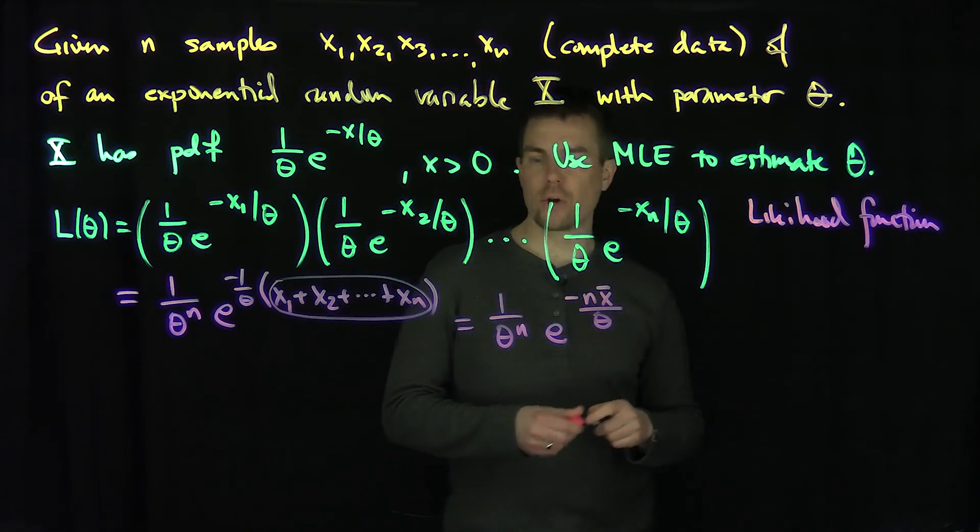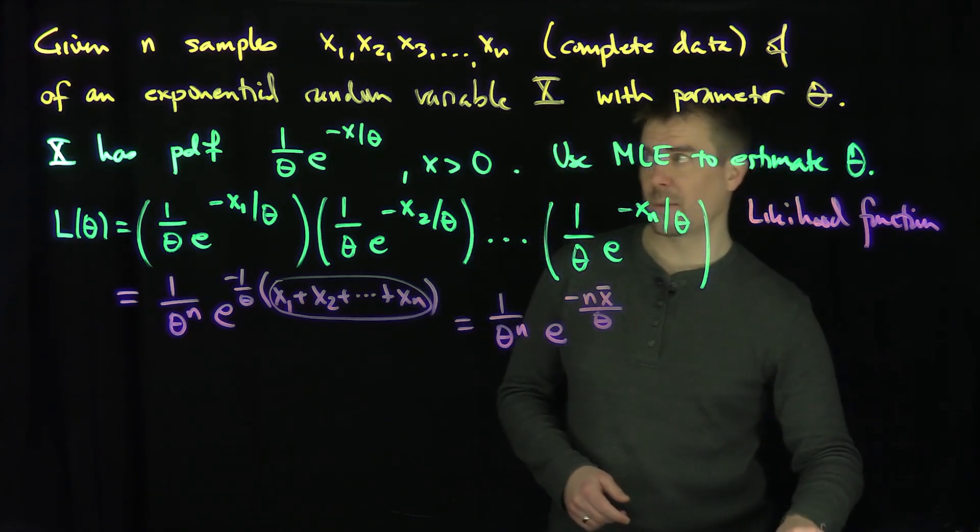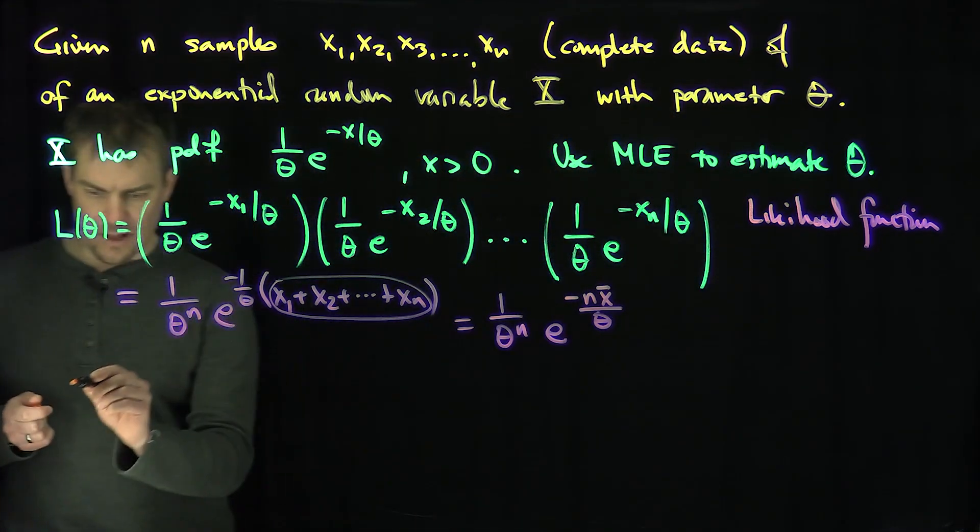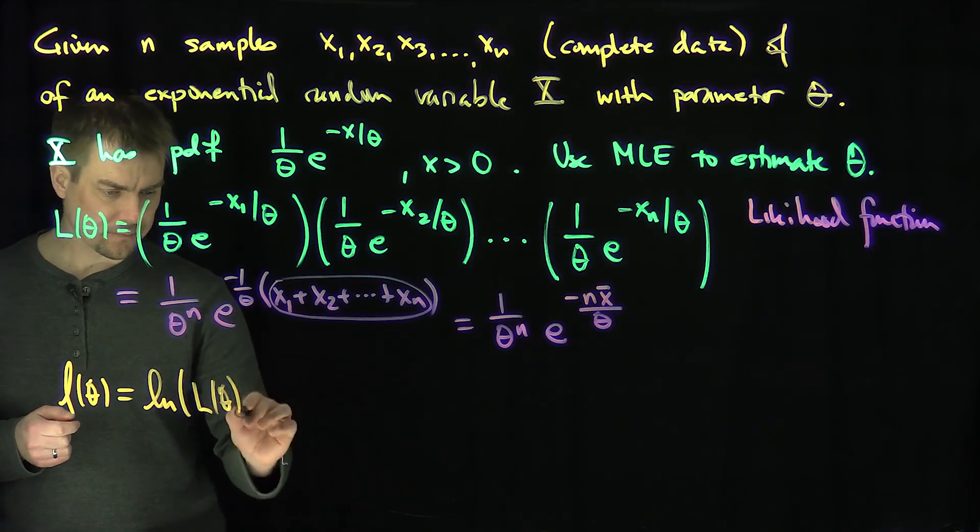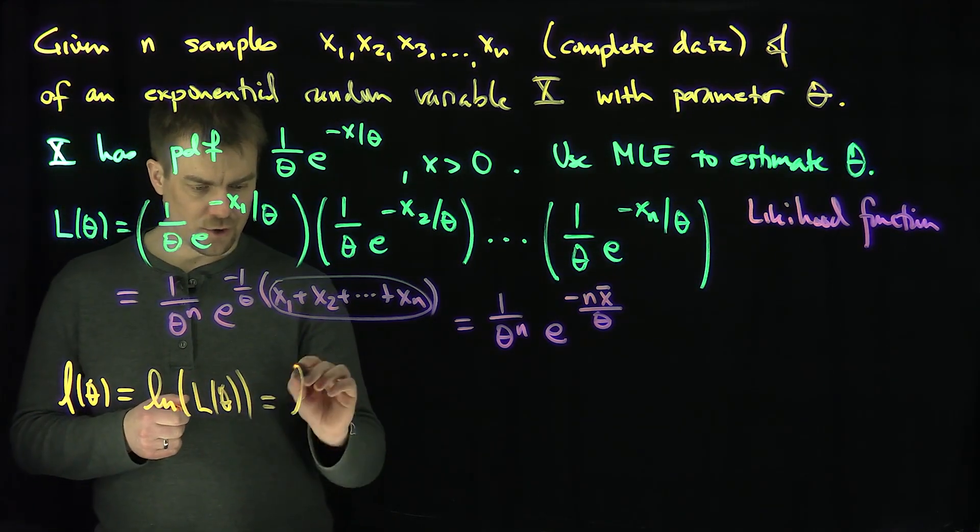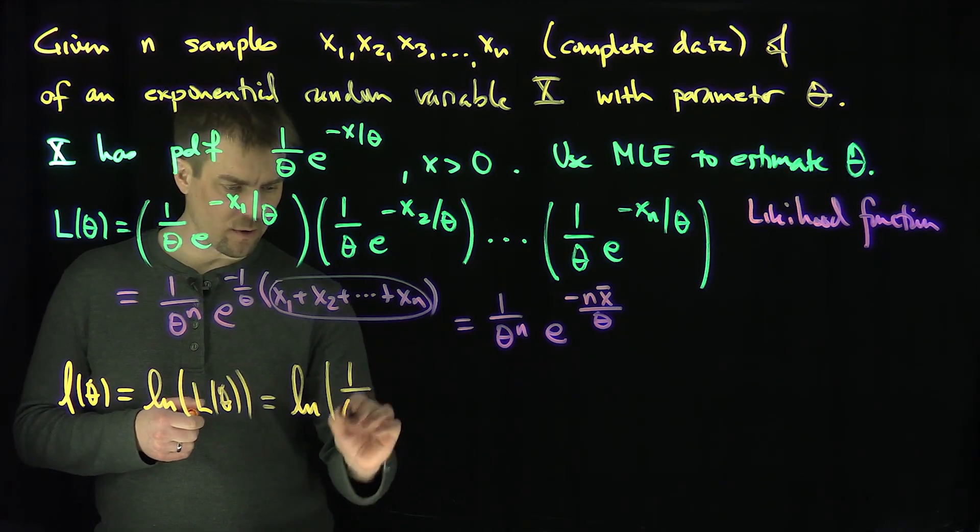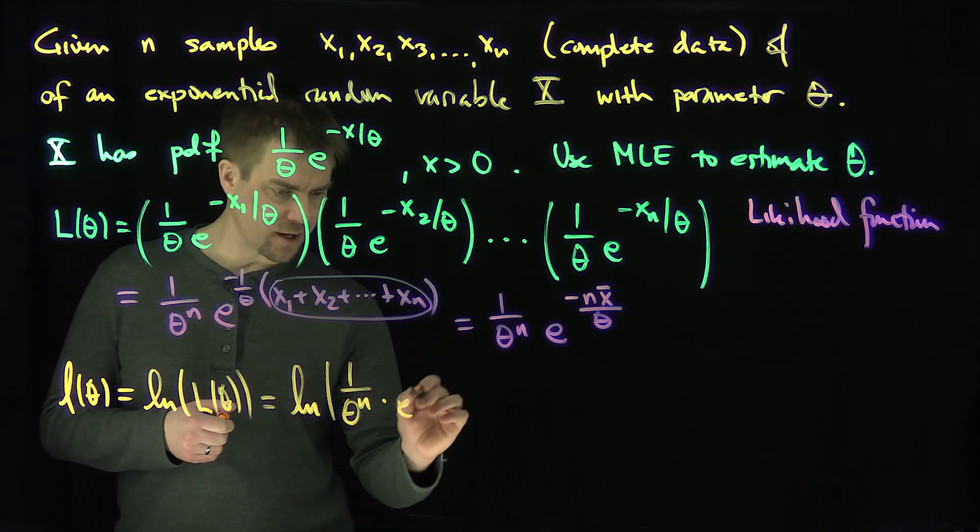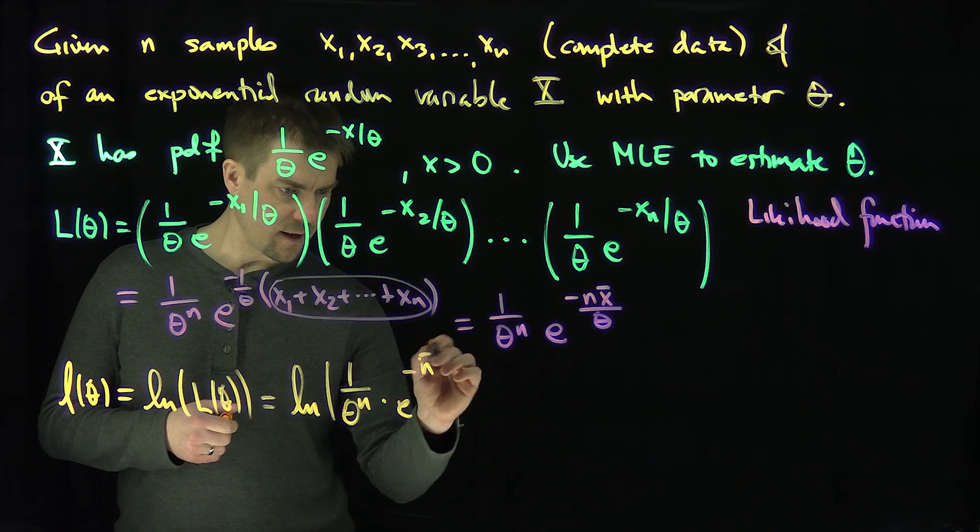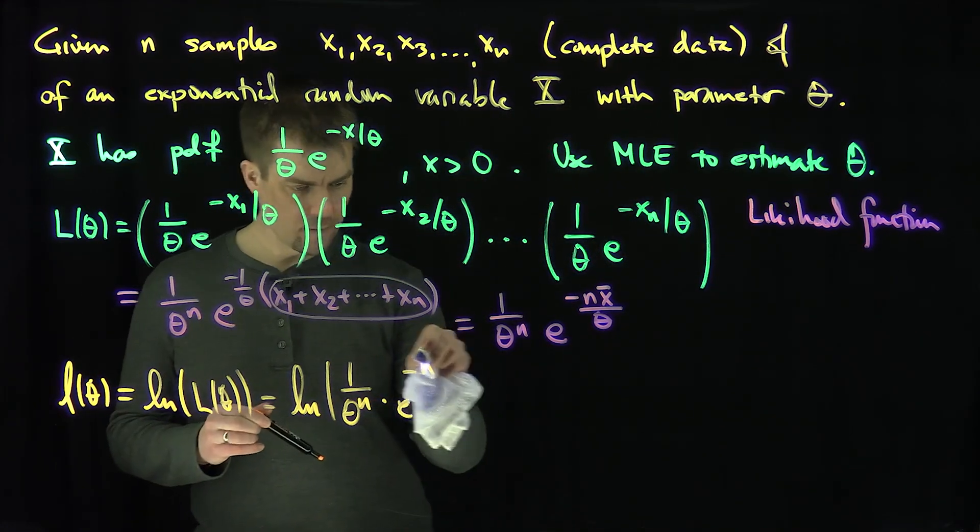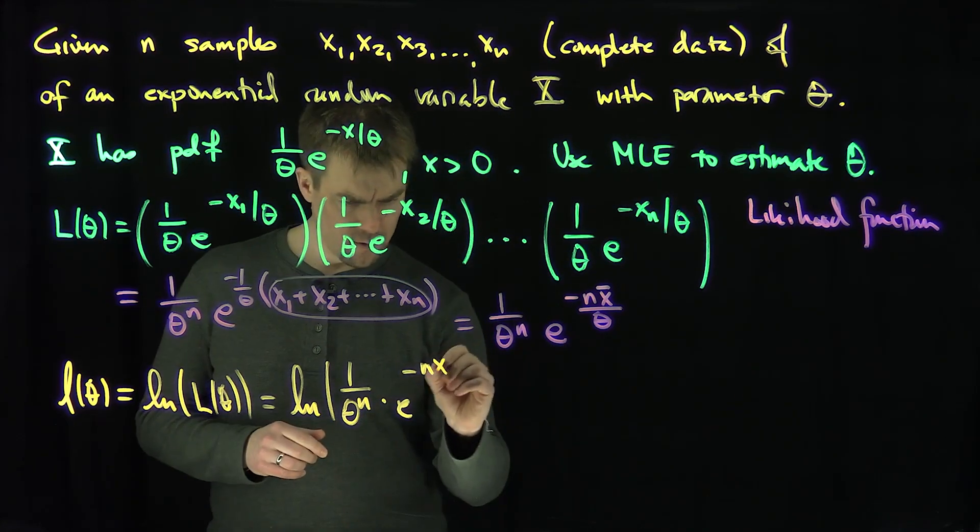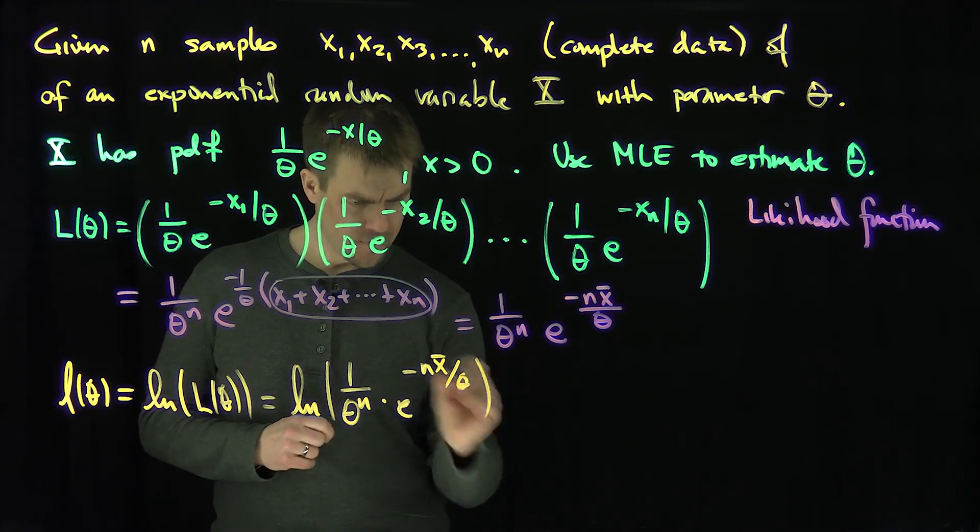And so now we're going to compute the log likelihood. So the log likelihood will help us solve the problem. I take the natural log of the likelihood function l of theta. So that's going to be the natural log of 1 over theta to the n times this exponential. And that's going to be negative n x bar over theta.